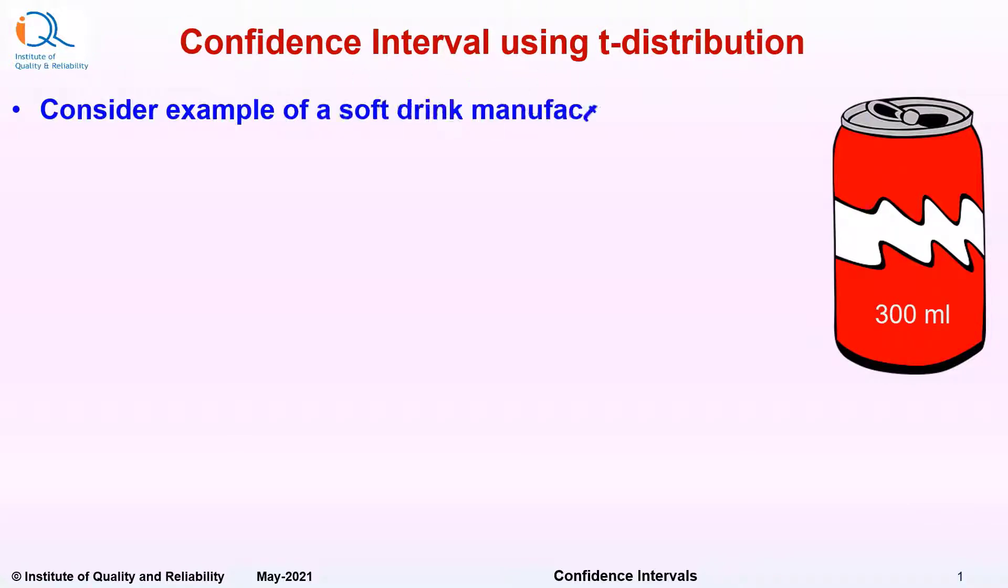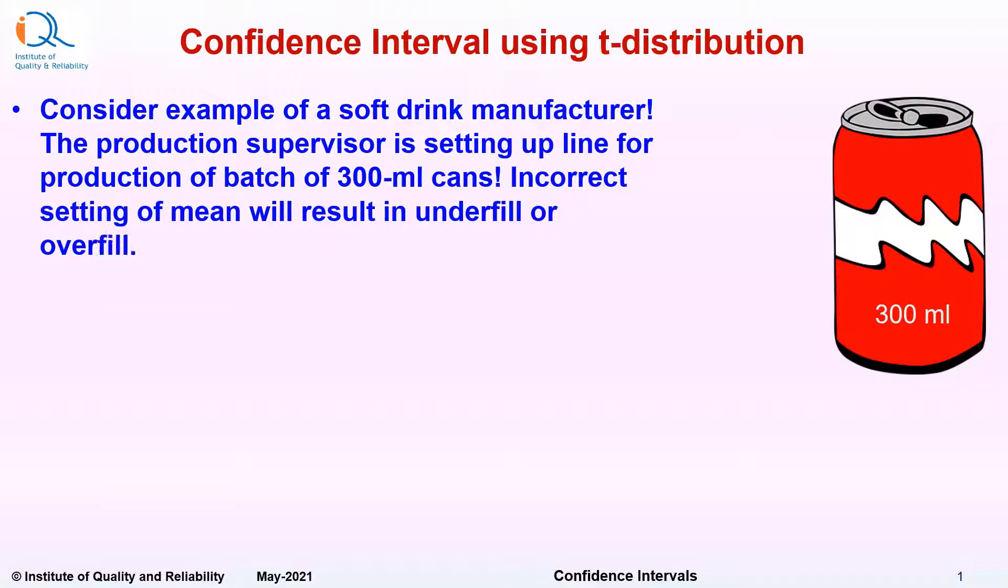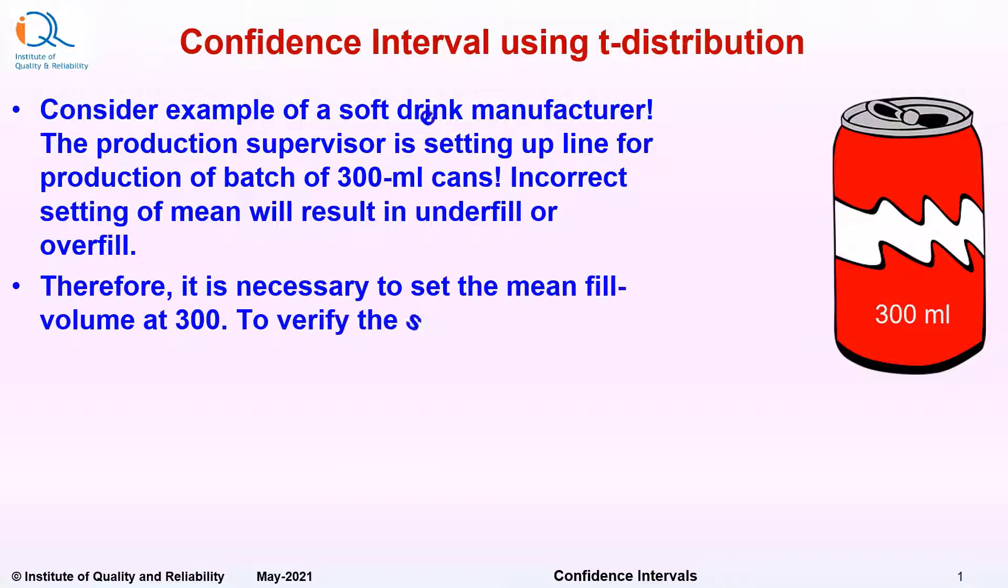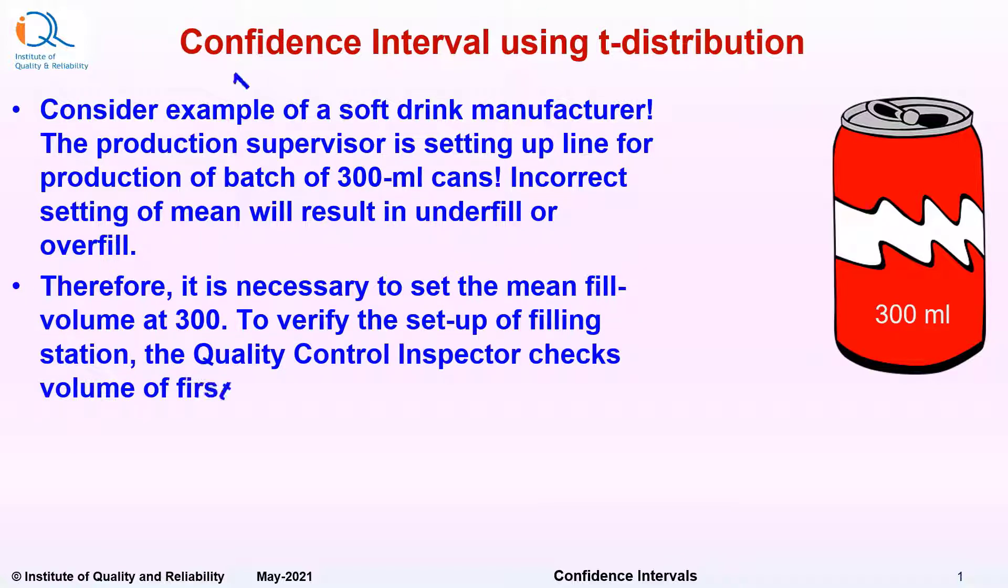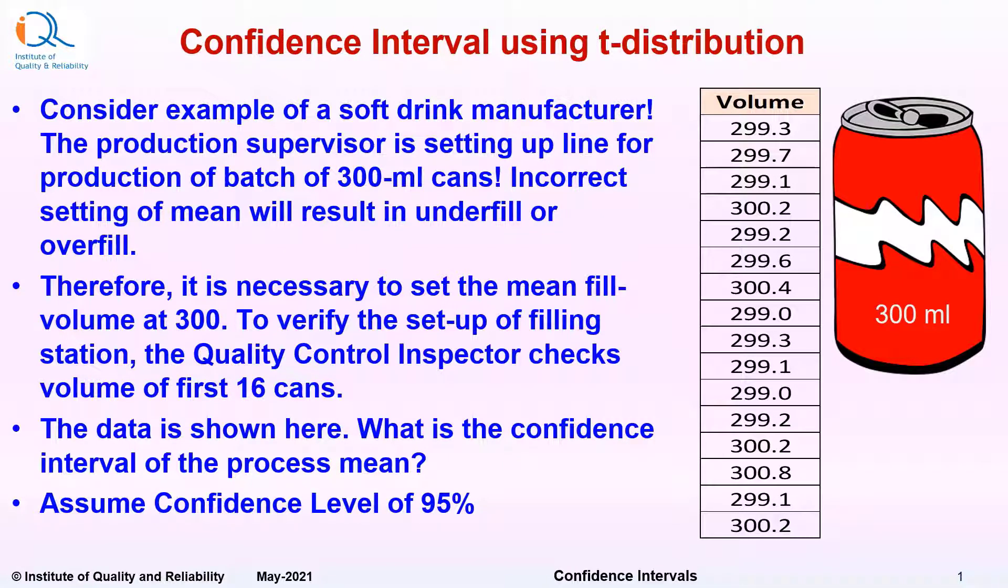Consider example of a soft drink manufacturer. The production supervisor is setting up line for production of batch of 300ml cans. Incorrect setting of mean will result in underfill or overfill of cans. Therefore, it is necessary to set the mean fill volume at 300. To verify the setup of filling station, the quality control inspector checks volume of the first 16 cans. The data is shown here. What is the confidence interval of the process mean? Assume confidence level of 95%.